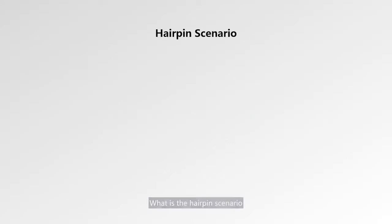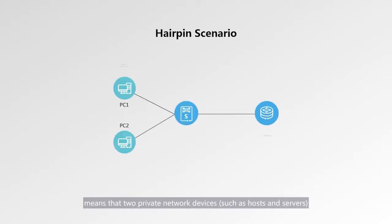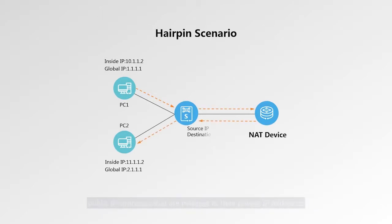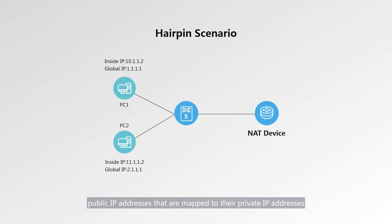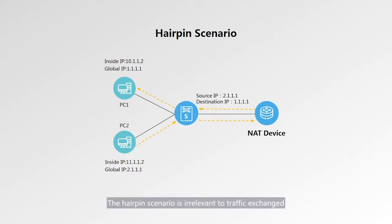What is the hairpin scenario? The hairpin scenario, which is also called NAT loopback, means that two private network devices, such as hosts and servers, connected to the same NAT device communicate with each other using public IP addresses that are mapped to their private IP addresses. The hairpin scenario does not involve mutual access using private IP addresses, and is irrelevant to traffic exchange between private network devices that is not processed by NAT.